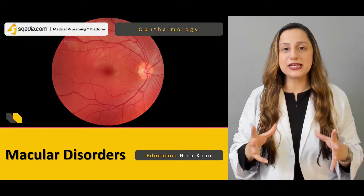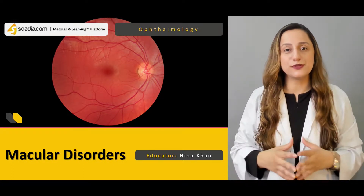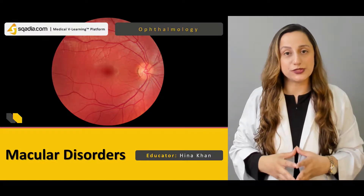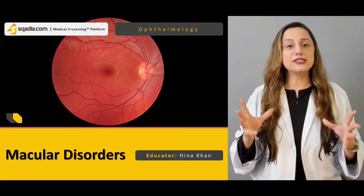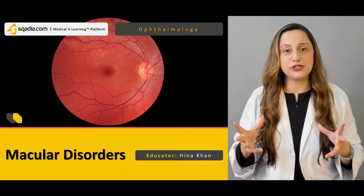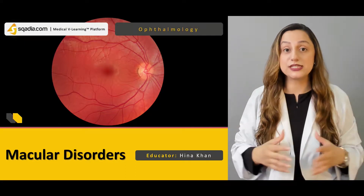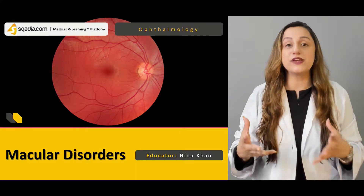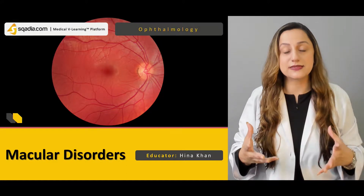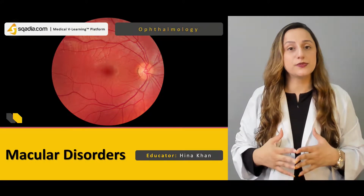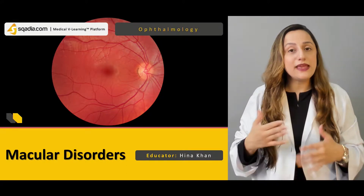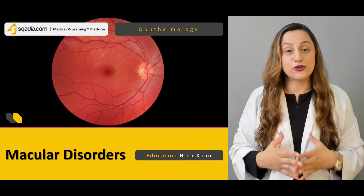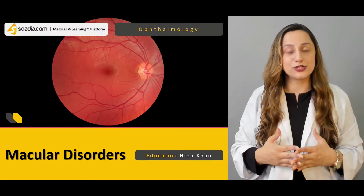The macula is basically responsible for the most central vision of an individual. The other anatomical features related to the macula — the fovea or the fovea centralis — are all responsible for relaying messages to the visual cortex for the final interpretation.